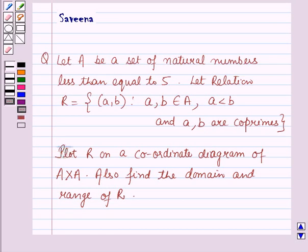Hello and welcome to the session. In this session we will discuss a question which says: let A be a set of natural numbers less than or equal to 5. Let relation R be the set containing ordered pairs (A, B) such that A, B belong to A, A is less than B, and A and B are co-primes. Please plot R on a coordinate diagram of A cross A, and also find the domain and range of R.